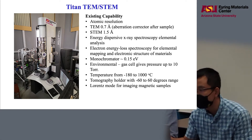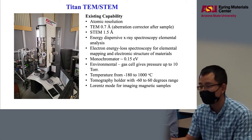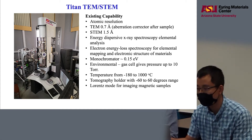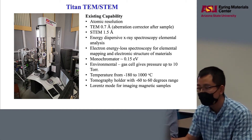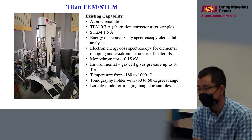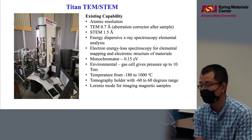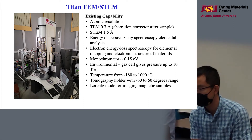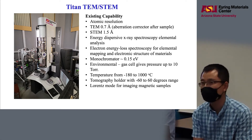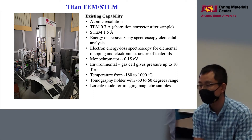With the environmental gas cell, it can give gas pressure up to 10 torr with different gases like CO2, oxygen, and water. With a heating holder, the temperature can go from room temperature to 1,000 degrees C. And with a liquid nitrogen holder, it can go down to minus 180 degrees. This microscope also has a tomography holder, which can go from minus 60 degrees to 60 degrees for 3D imaging.